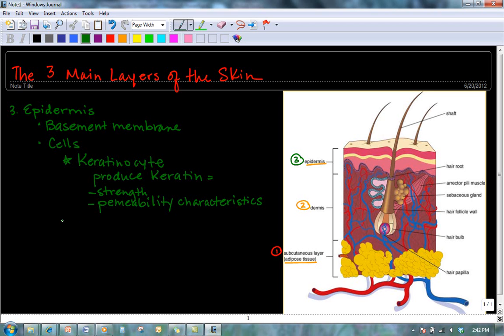Another type of cell that you'll find in the epidermis is called a melanocyte. Melanocytes are responsible for skin color. They're going to produce a protein called melanin, which is a dark brown or black pigment that is going to give our skin its color.